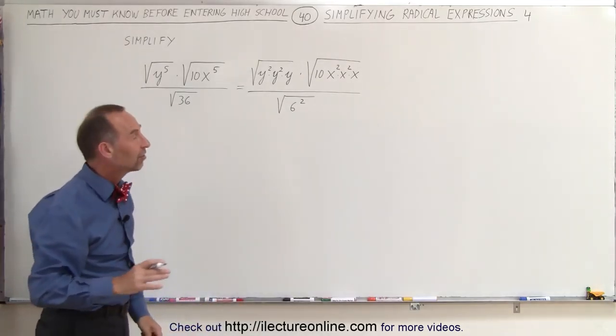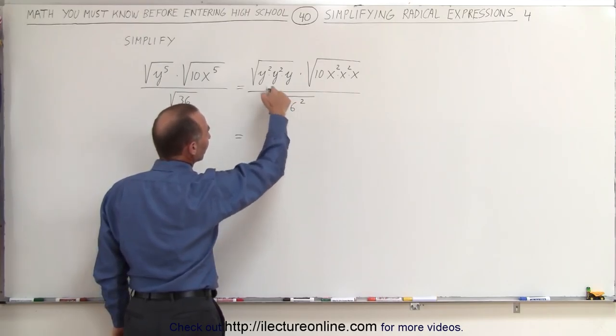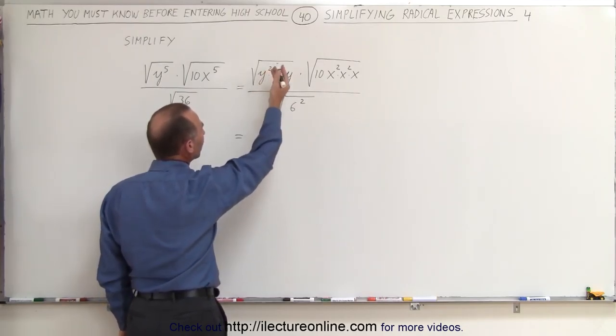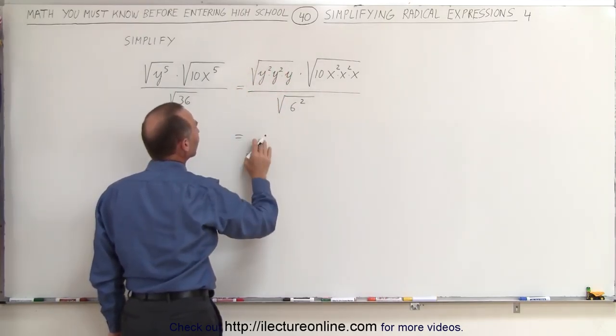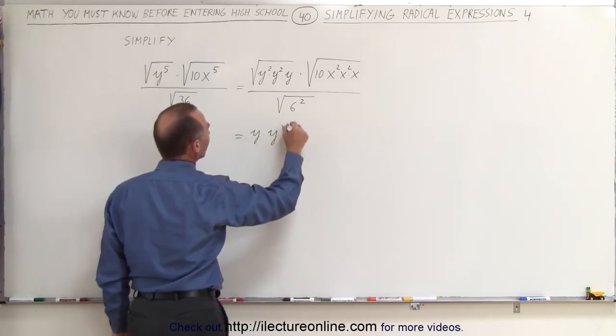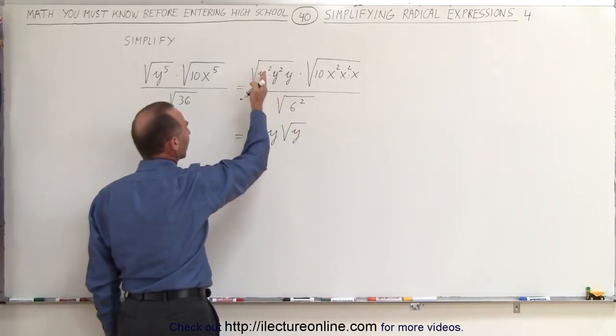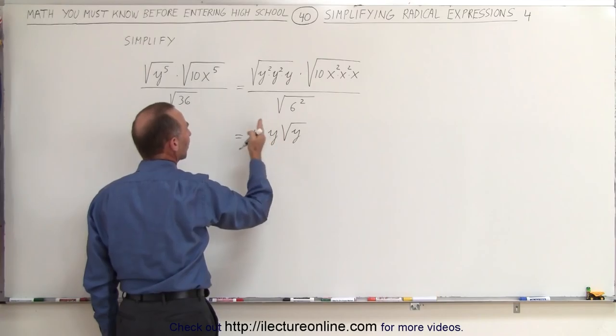Now we can simplify that. For each variable or number that is squared, we can simply take it outside the radical sign. So this becomes y times y times the square root of y. The square root of something squared simply becomes that item, so the square root of y squared is simply y.